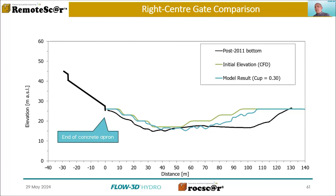So now on the right center gate — this is the one we think might be impacted by some mounding that went on downstream. In our model, the plunge pool is symmetrical, so there's no reason why our computed scour results would not also be roughly symmetrical. My guess is we're not quite capturing that hydraulic condition correctly on this side, and I think it's due to the mounding.